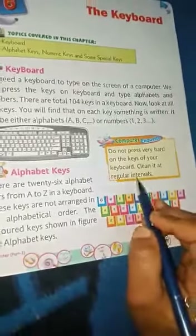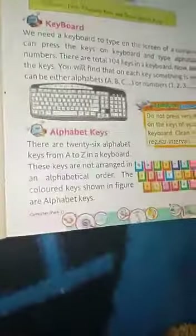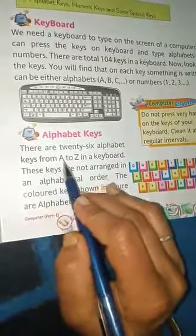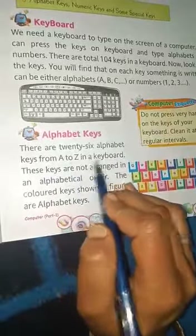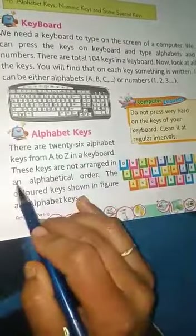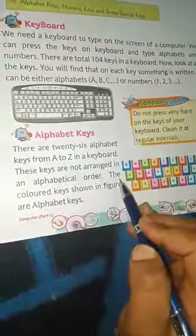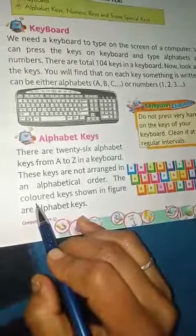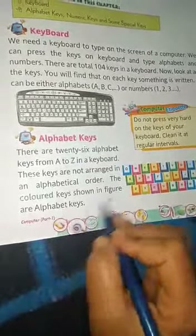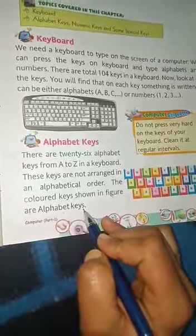Alphabet keys: there are 26 alphabet keys from A to Z in a keyboard. These keys are not arranged in alphabetical order. The colored keys shown indicate the alphabet keys.